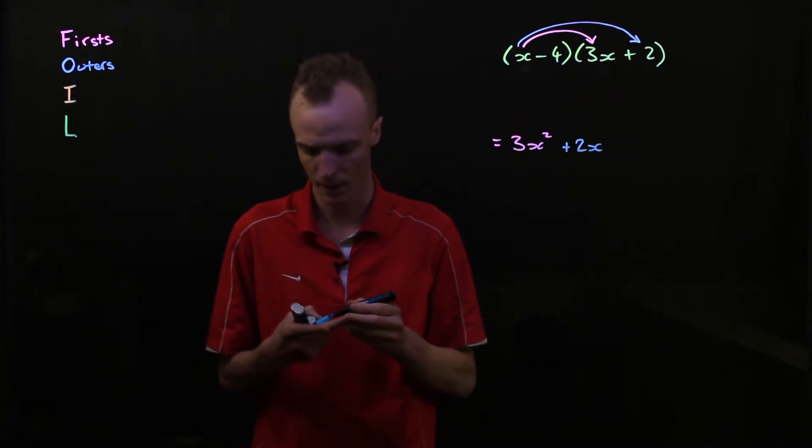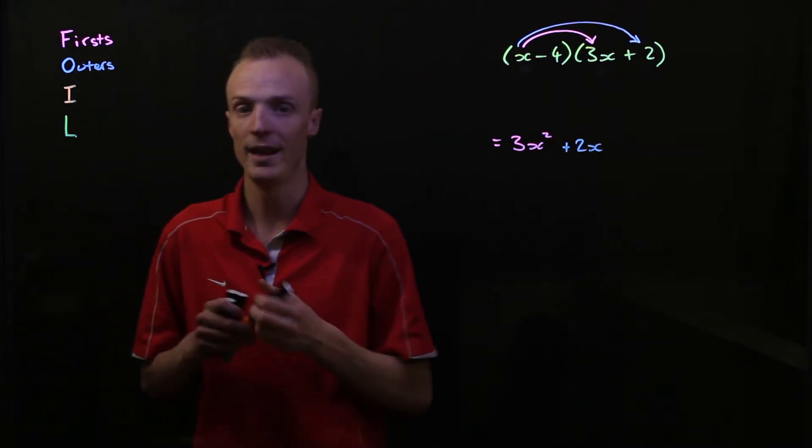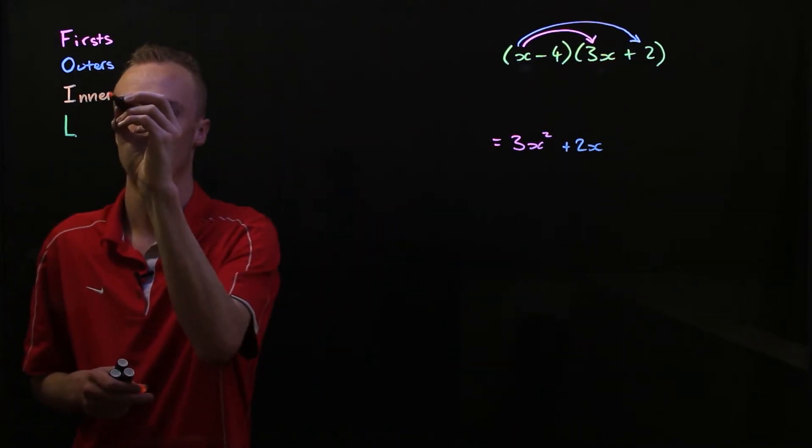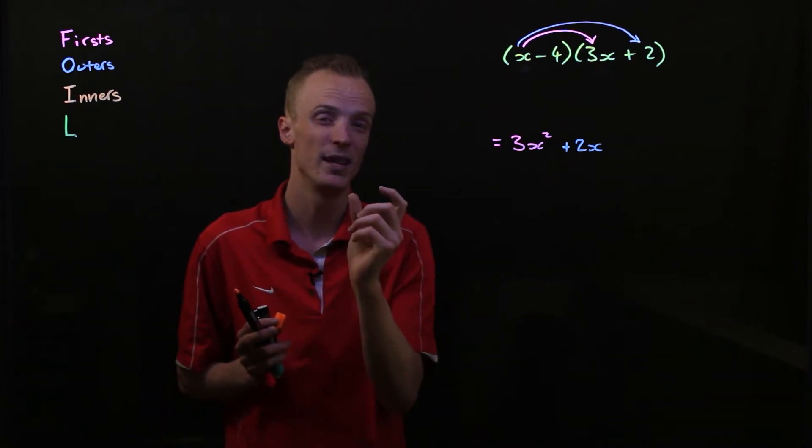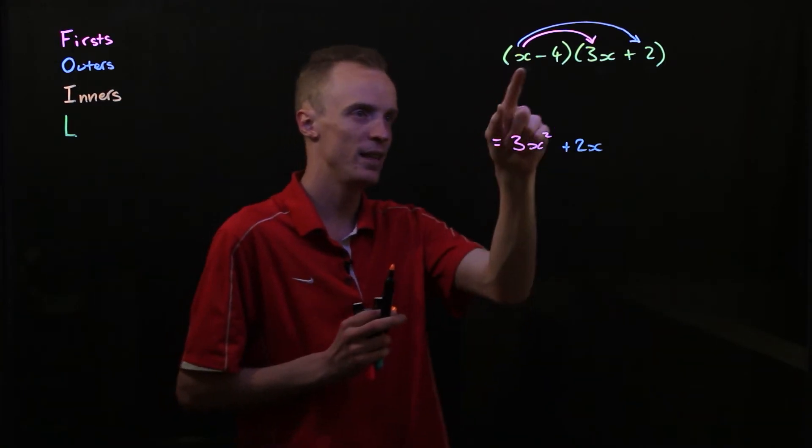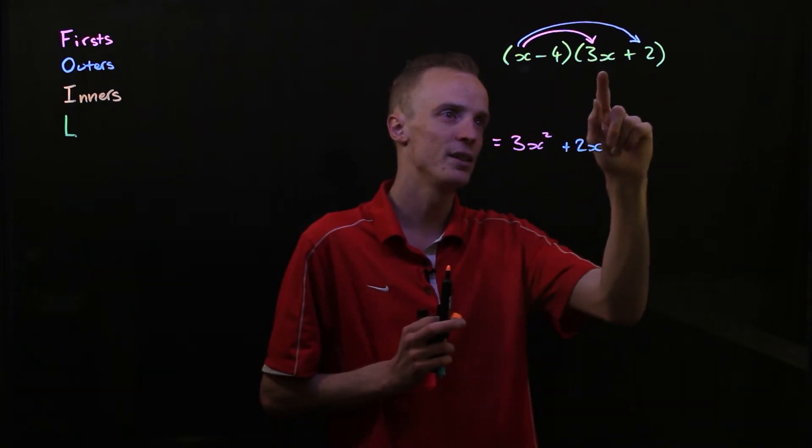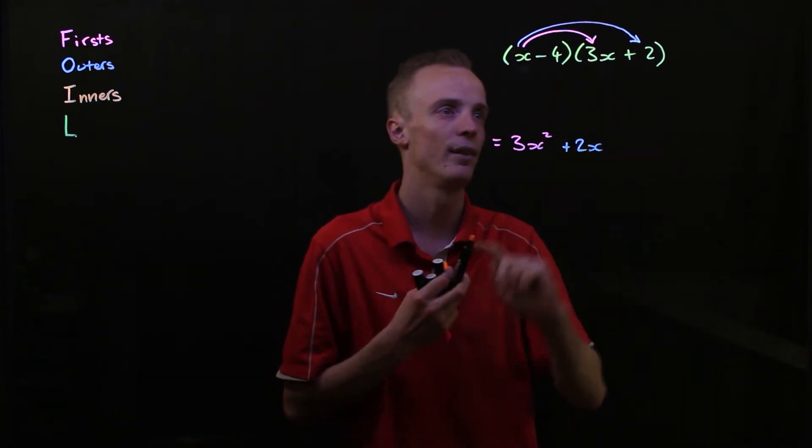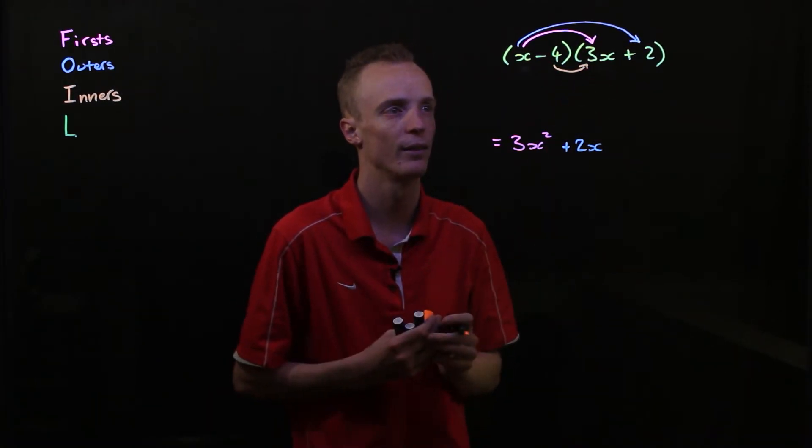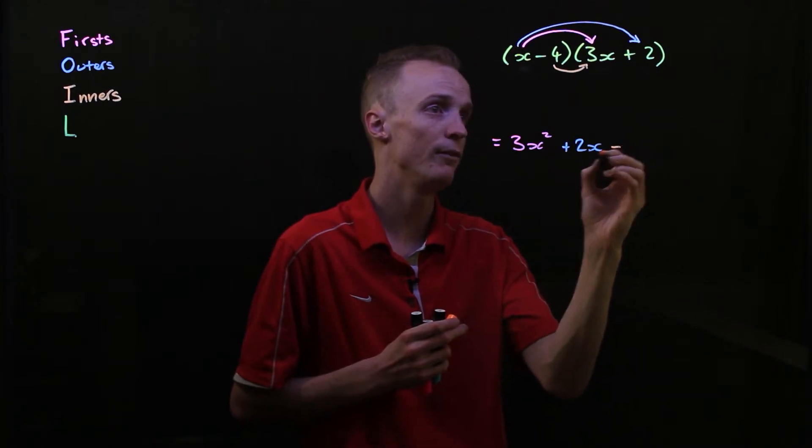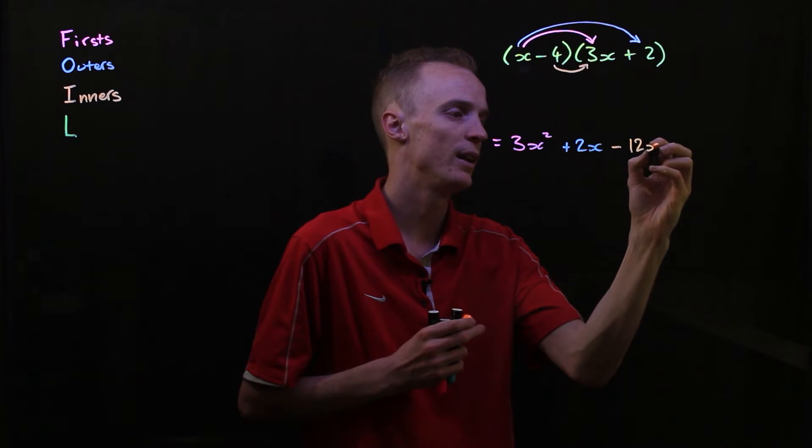And I move to my next step. And my next step is the I step. And the I stands for inners. And what this step says to us is we're going to multiply the two most inside terms with each other. So the most inside term of this first bracket is this negative 4, and the most inside term of this second bracket is this 3x. So I'm going to multiply negative 4 with positive 3x. Now negative multiplied by a positive is going to be a negative. 4 times 3 will be 12. So this will be negative 12x.